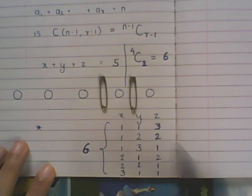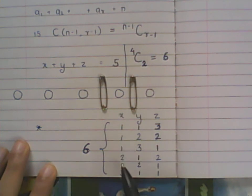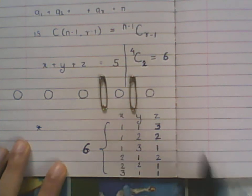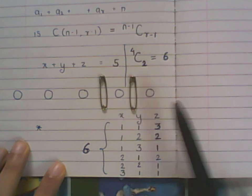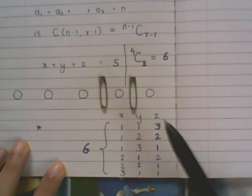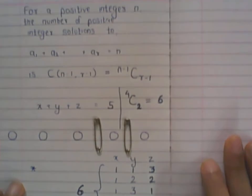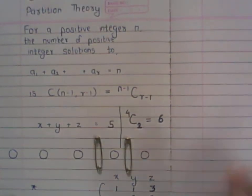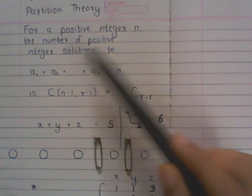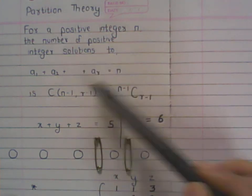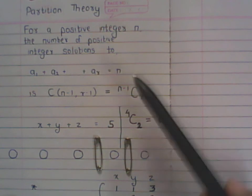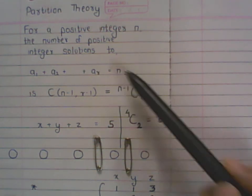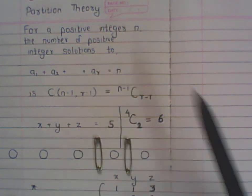These six cases are the brute-force enumeration of all solutions. As the number of balls or children increases, brute force becomes very tedious — that's where the formula comes into play. The concept from partition theory states that the number of positive integer solutions to a₁+a₂+...+aᵣ=n is C(n-1, r-1), where n is the total sum and r is the number of variables.